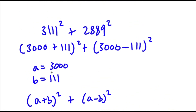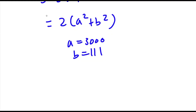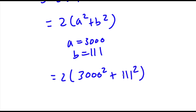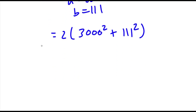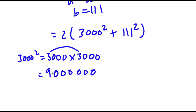Now, remember how we set a equal to 3,000 and b equal to 111. So if I substitute these values back in, I get 2 times (3,000 squared plus 111 squared). Now, 3,000 squared is the same thing as 3,000 times 3,000. We can ignore the zeros for now and just do 3 times 3, which gives us 9, and then we add 6 zeros. So our answer here is going to be 9,000,000.